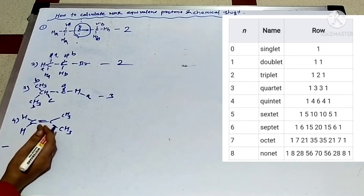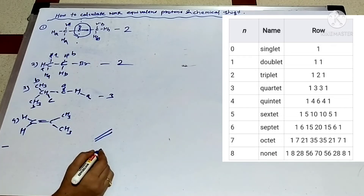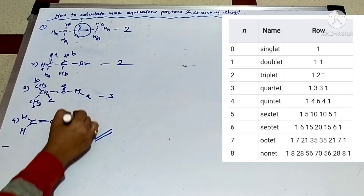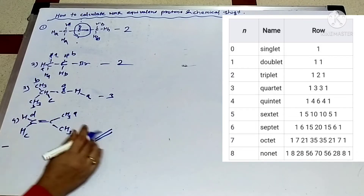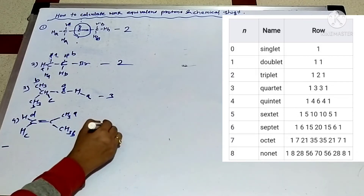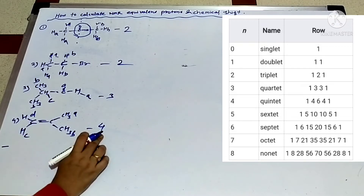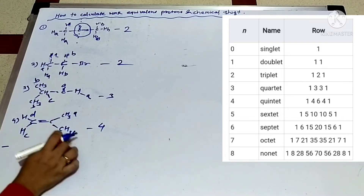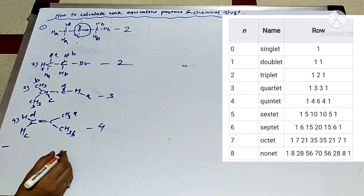Next, there is a double bond structure. On the double bond there are four different types — A, B, C, and D — because the double bond makes each position geometrically distinct. So there are four types of equivalent protons.